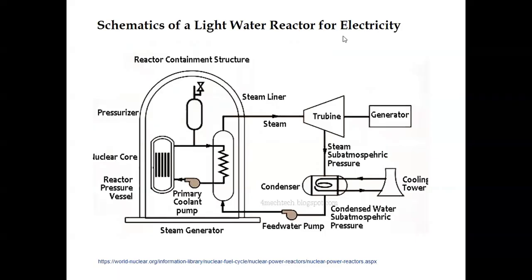Looking at how energy is produced in a nuclear power plant: this schematic from the World Nuclear Organization shows the nuclear reactor pressure vessel, which contains the fuel bundles and control rods. When fission happens, energy is released and given to the coolant water.